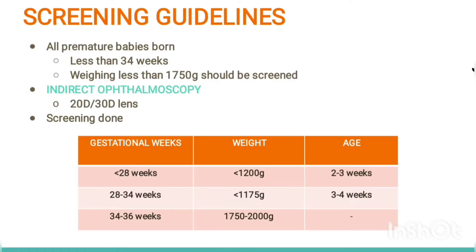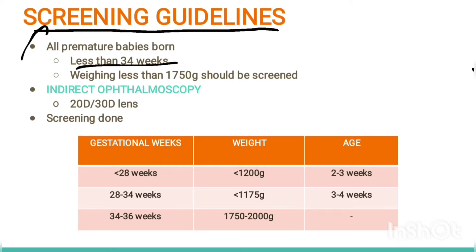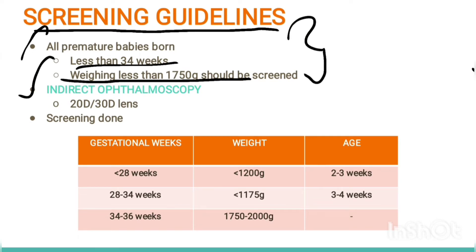Now we will see management, starting with screening guidelines. Screening criteria: all premature babies born less than 34 weeks, and babies weighing less than 1750 grams should be screened. Screening is done using an indirect ophthalmoscope with a 20D or 30D lens.